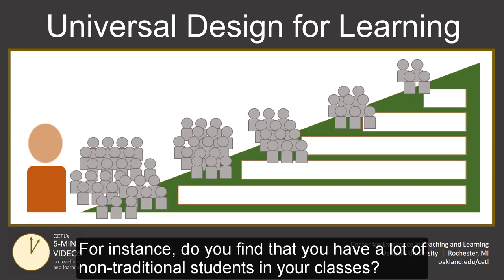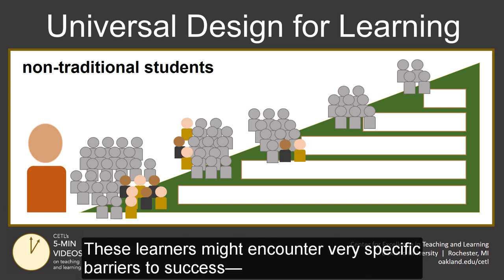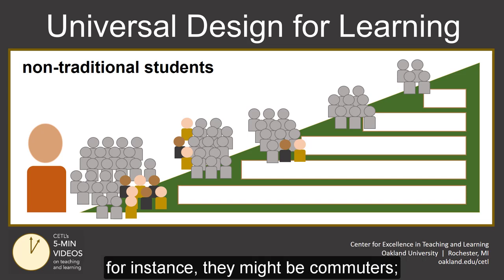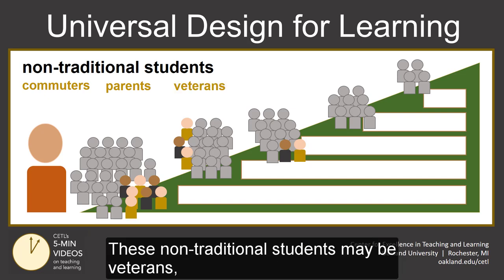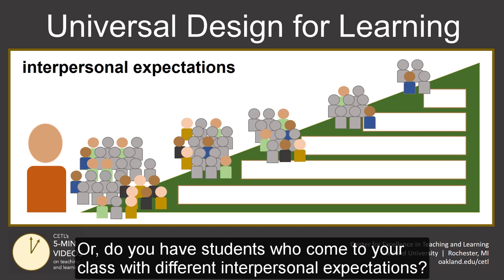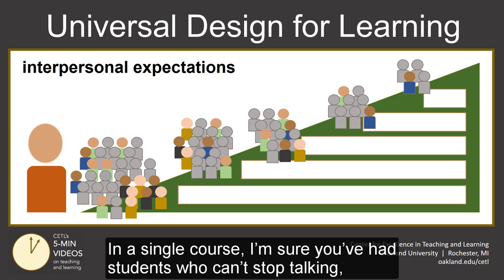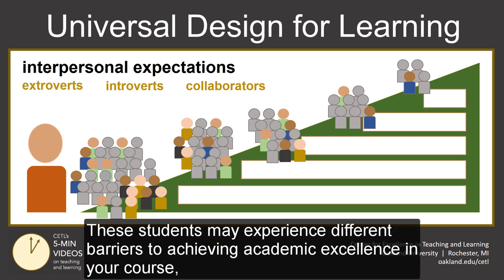For instance, do you find you have a lot of non-traditional students in your classes? These learners might encounter very specific barriers to success. For instance, they might be commuters, or they may have to balance work and life responsibilities along with their academic course load. These non-traditional students may be veterans who face unique challenges rejoining civilian life. Or do you have students who come to your class with different interpersonal expectations? In a single course, you've likely had students who can't stop talking, and students you can't get to talk. These students may experience different barriers to achieving academic excellence in your course.